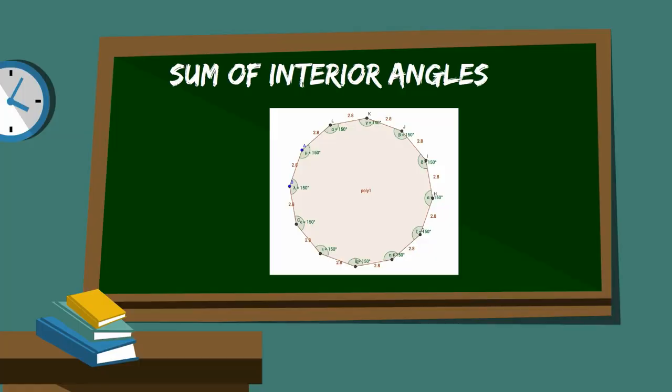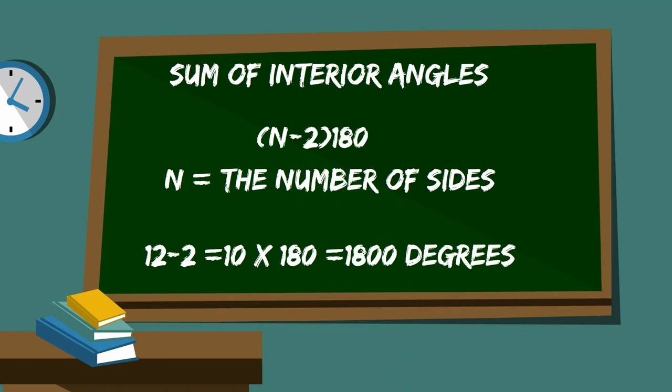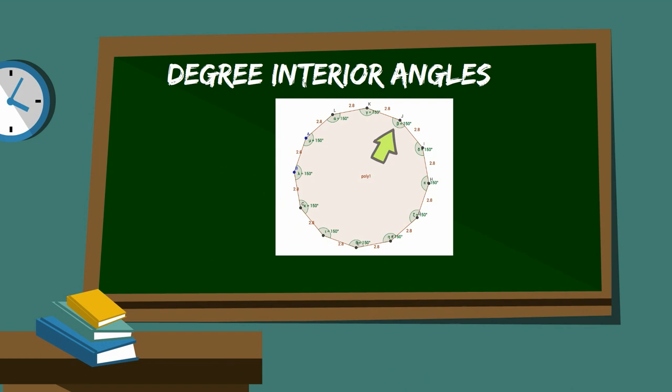You can find the sum of all the interior angles of a dodecagon by taking (n-2) times 180, where n equals the number of sides. If you do the math you get 1800 degrees.